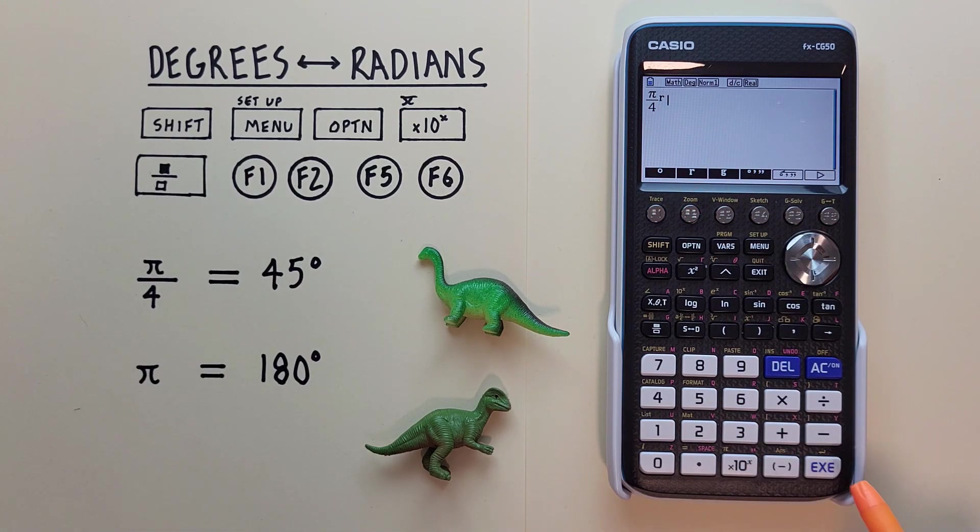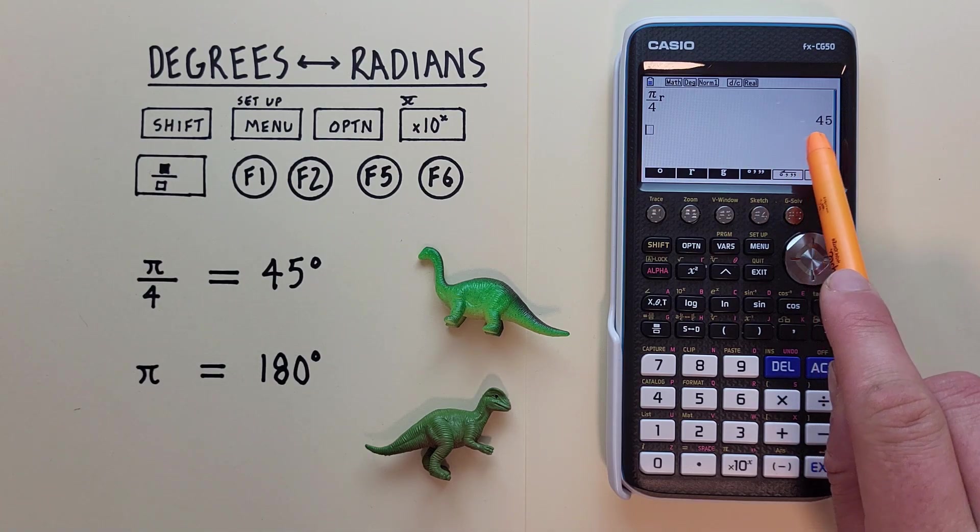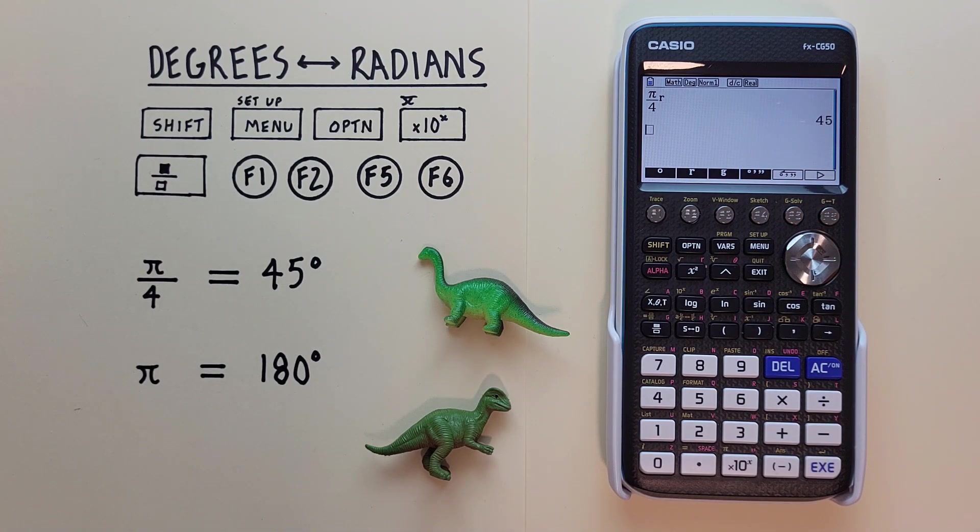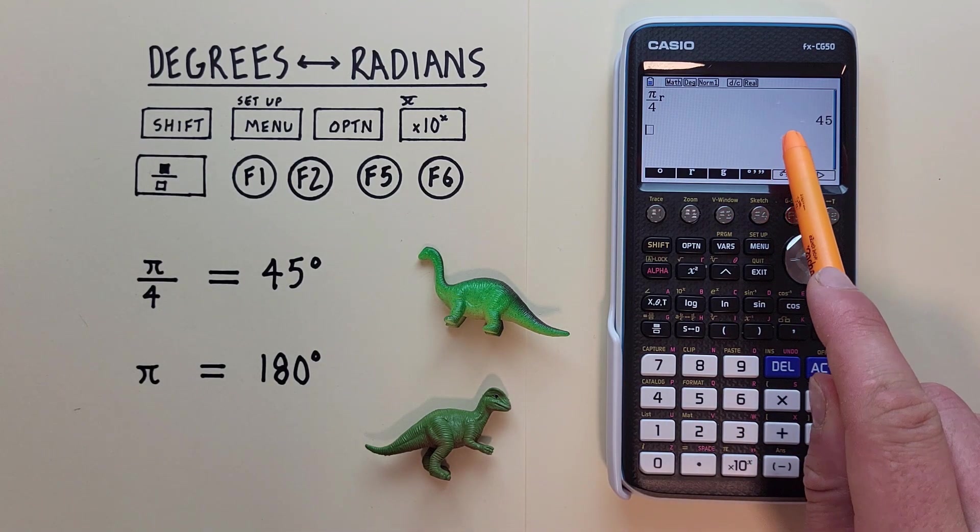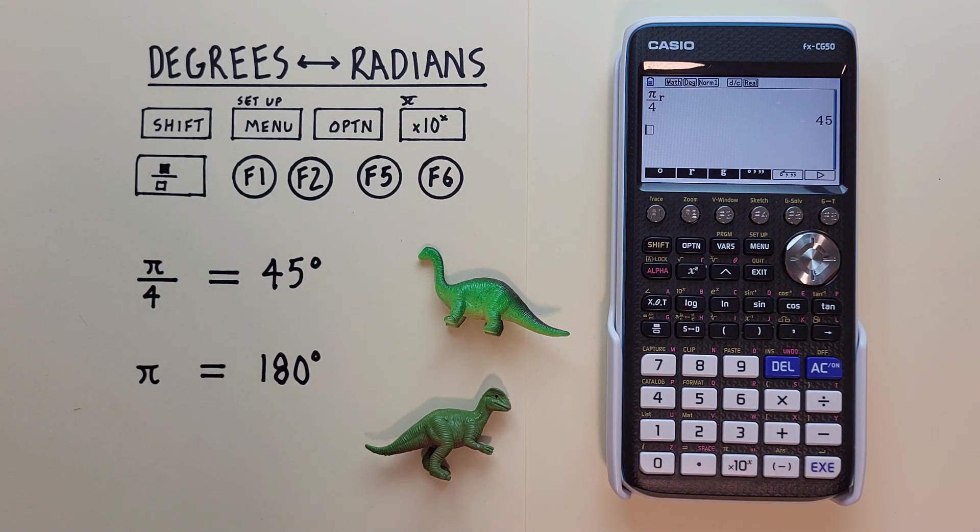And if we hit EXE, we see that converts to 45 degrees. What if we're given those 45 degrees and want to convert that to radians? Well, again, to do that, we have to change our calculator to the mode we want our results in.